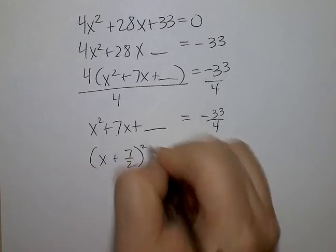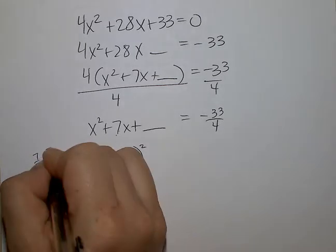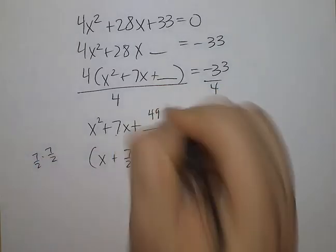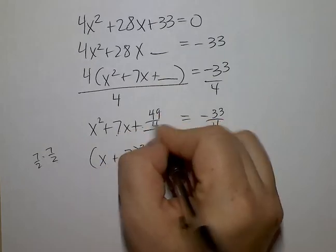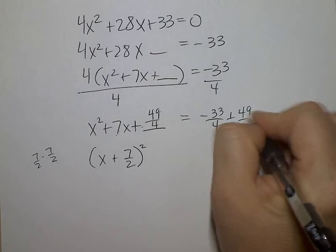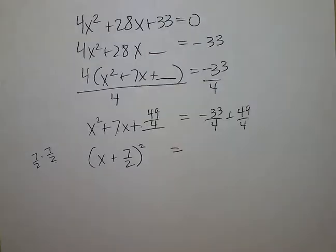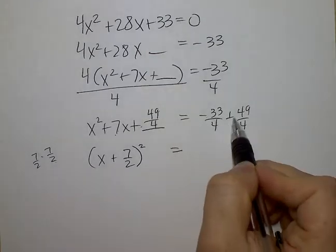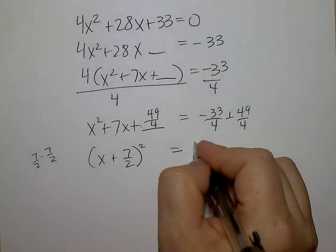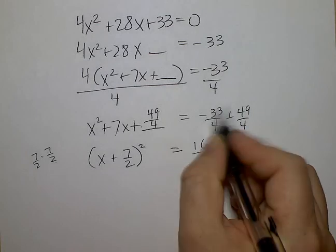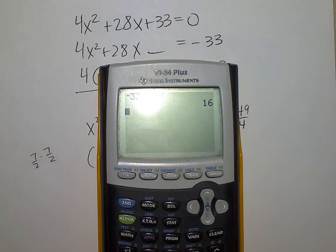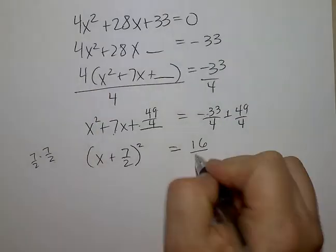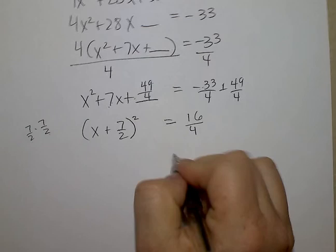When I square 7 halves, 7 times 7 is 49. 2 times 2 is 4. So I've just added 49 over 4. I have to come over here and add 49 over 4 as well. Negative 33 and positive 49 is 16. Am I correct? It is 16. And 16 over 4 reduces to 4.